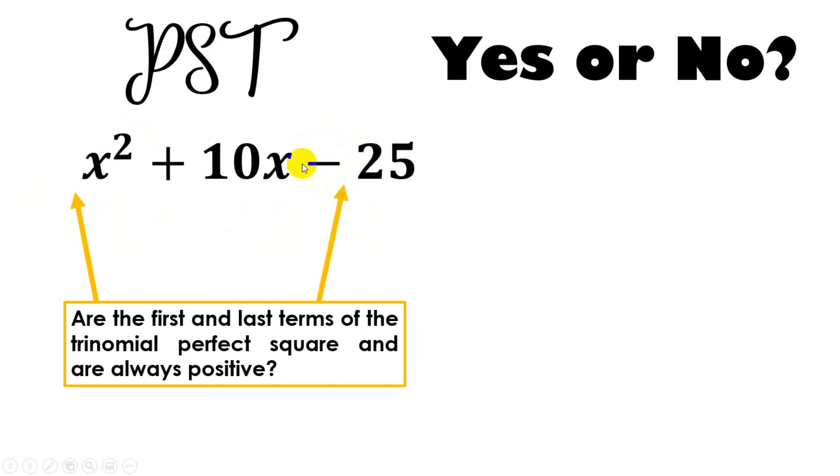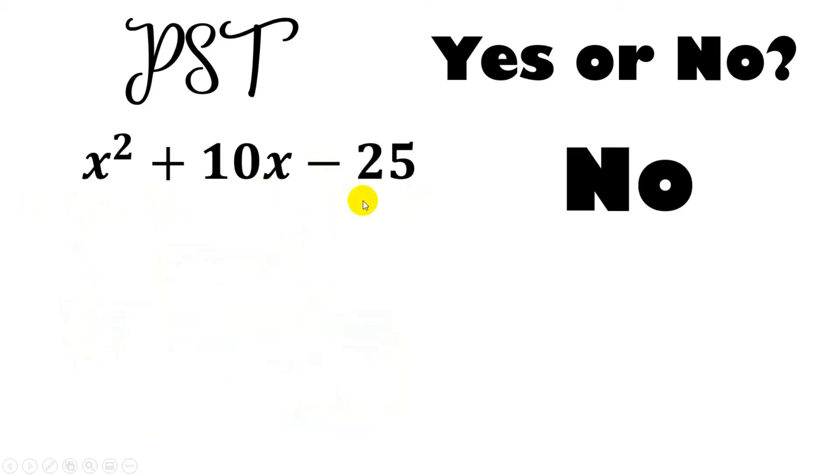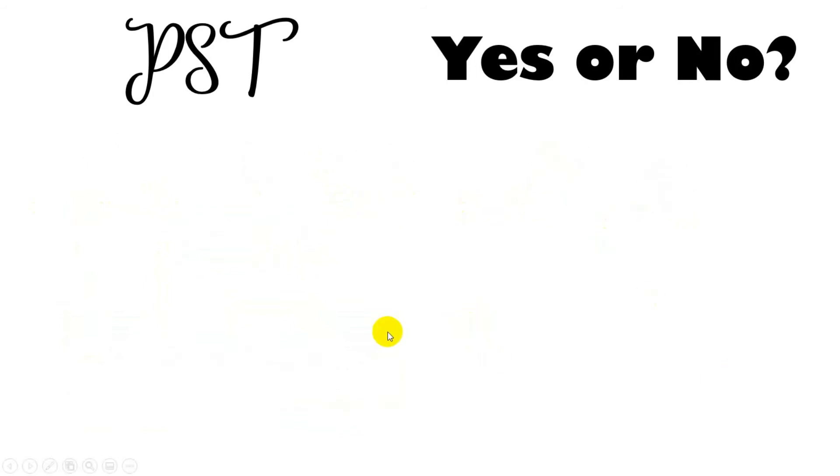But, the last term, as you can see, is negative. And, if we apply the laws of sign, and if you remember the abbreviation KCC, we keep change and change. From positive 25, when we apply that rule, it becomes negative 25. In short, our last term is not positive. The last term is negative. That is why this trinomial is not a PST. No, it is not a PST.